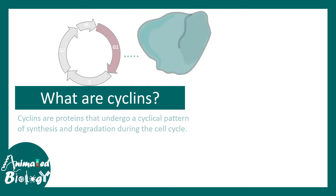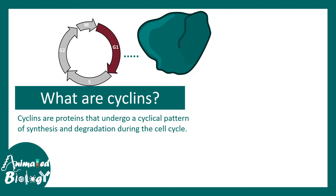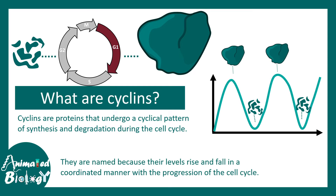So what are cyclins? Cyclins are proteins that undergo a cyclical pattern of synthesis and degradation, hence they are known as cyclins. In certain stages of the cell cycle they are produced, and in certain stages they are degraded. Their activity is restricted in a time-bound fashion — their levels rise and fall in a coordinated manner with the progression of the cell cycle.